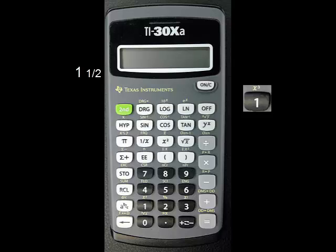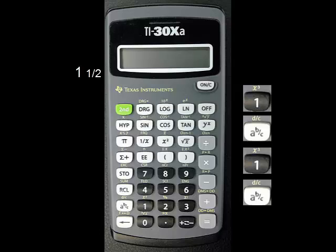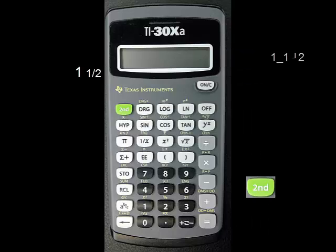To see this, enter 1, the ABC button, 1 again, the ABC button again, then 2. Now press 2nd and the ABC button. The fraction 3 over 2 should appear on the screen. Pressing 2nd and the ABC button again will convert back to a mixed number.